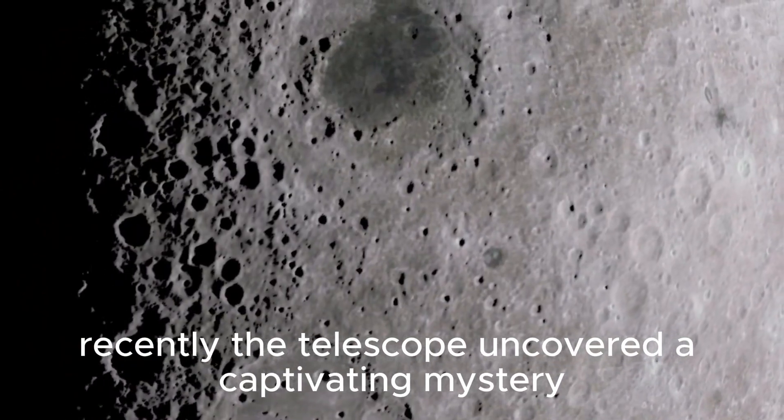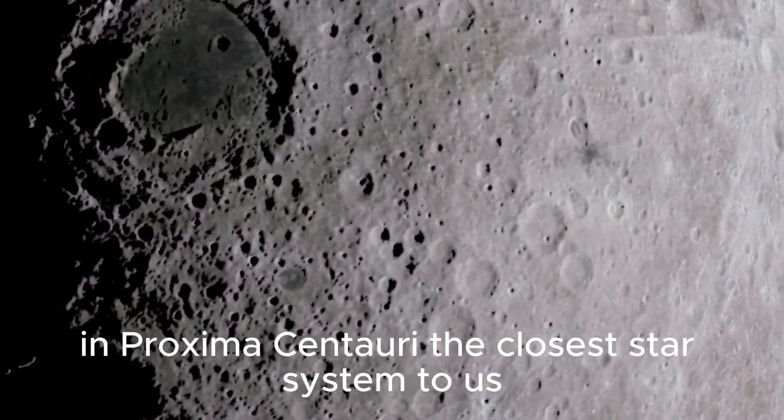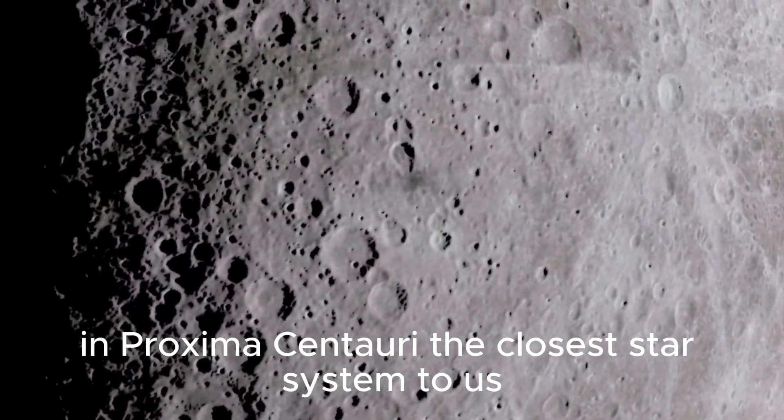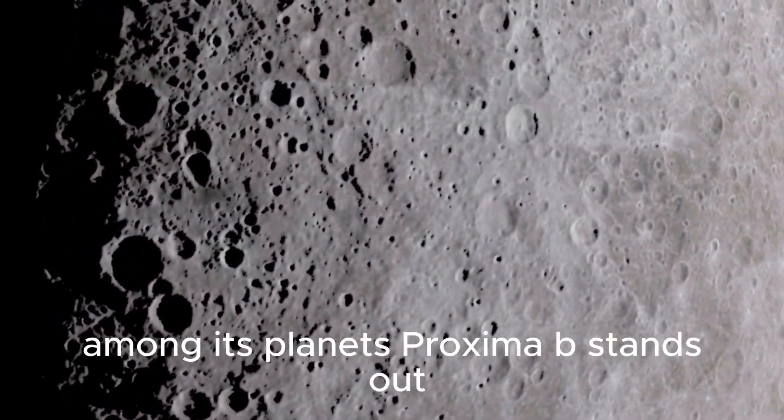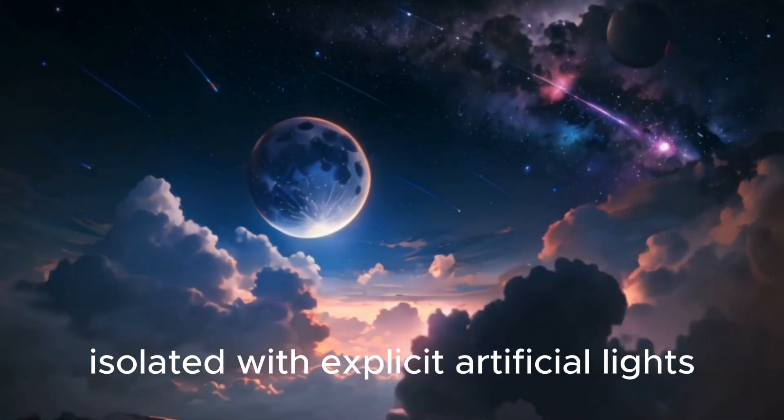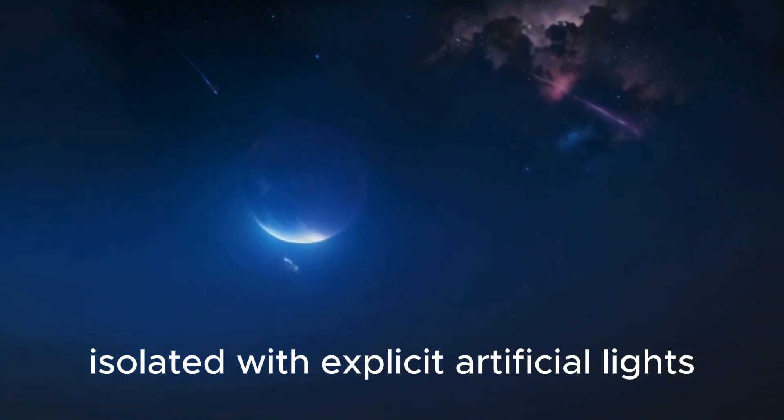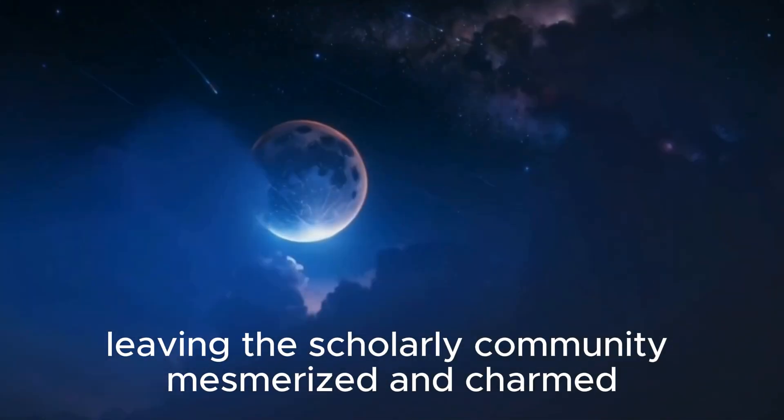Recently, the telescope uncovered a captivating mystery in Proxima Centauri, the closest star system to us. Among its planets, Proxima B stands out, isolated with explicit artificial lights, leaving the scholarly community mesmerized and charmed.